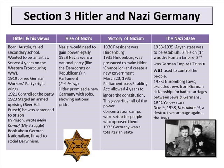Hitler promised a new Germany with jobs and national pride. People want to work — the more people out of work, the more idle they become, and idle minds are the devil's playground. In 1930, President Hindenburg was pressured to make Hitler chancellor. By March 23, 1933, Parliament passed an Enabling Act allowing four years to ignore the Constitution — this gave Hitler all the power. Concentration camps were set up for people who opposed them, and by 1933 Germany was a totalitarian state.